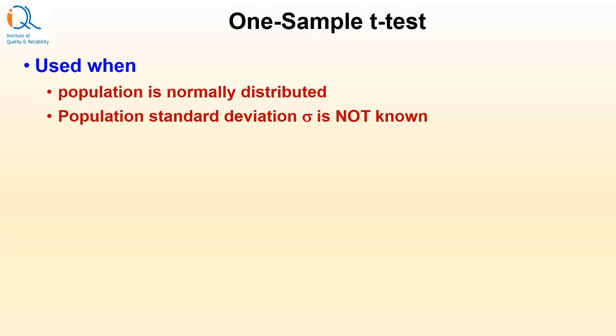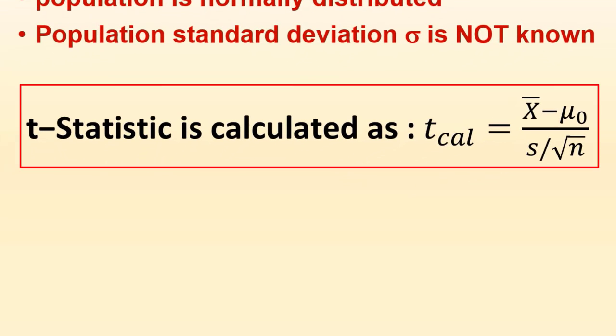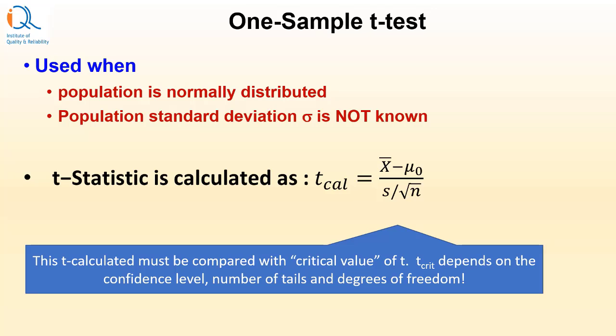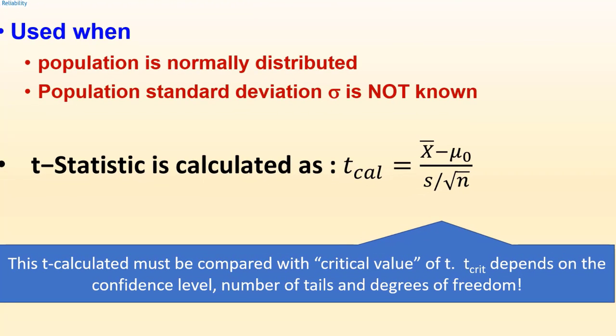One sample T-Test uses student's T distribution. It is used when population is normally distributed and population standard deviation sigma is not known. The T statistic is calculated similar to Z statistic and is given by T calculated equals x bar minus mu0 upon s upon square root n. The term s upon square root n is called standard error of mean. This T calculated value must be compared with the critical value of T. T critical depends on the confidence level, number of tails and degrees of freedom. We will explain the term degrees of freedom in this video.